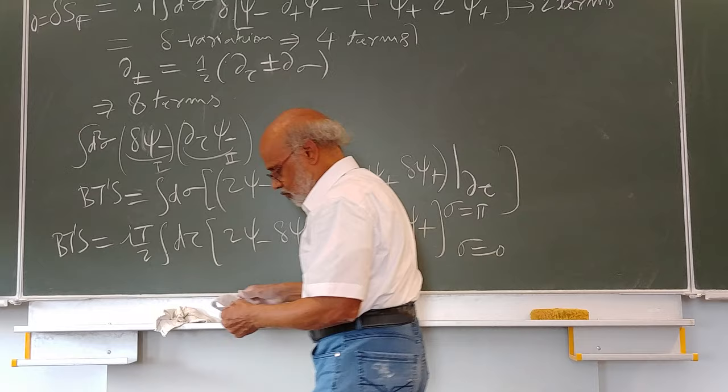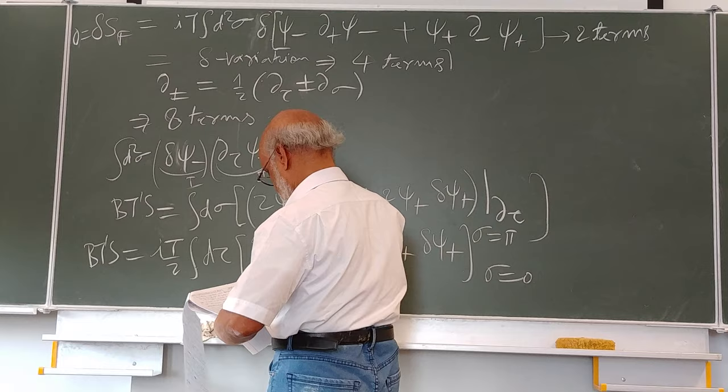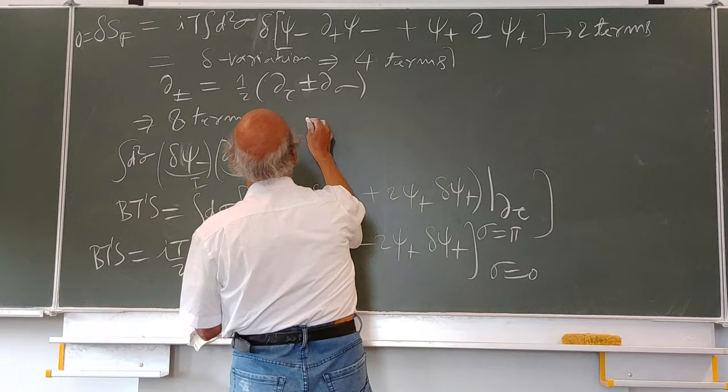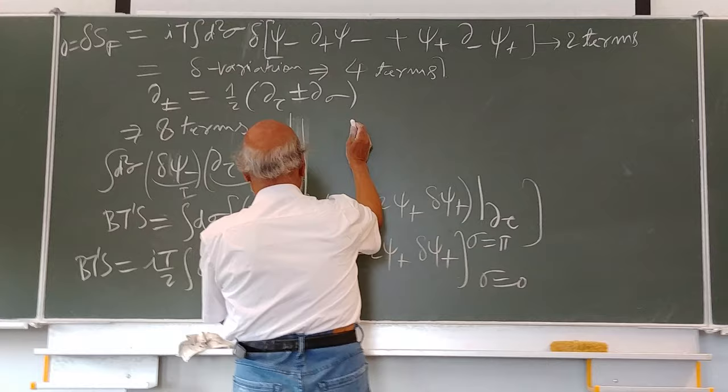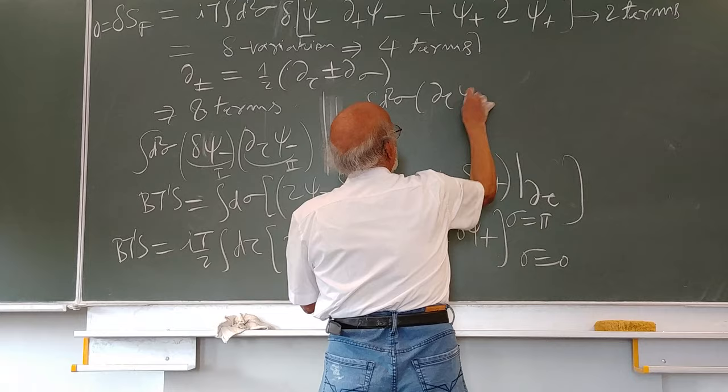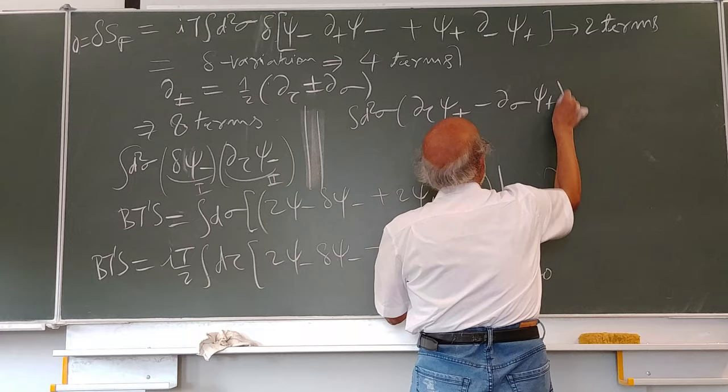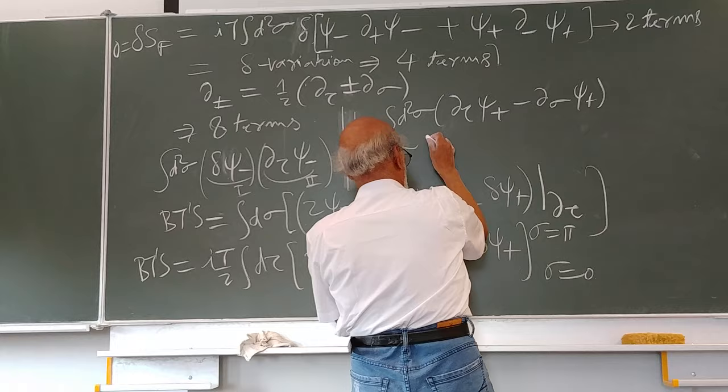In addition, you would have terms of the type: d-squared sigma times (del-tau psi-plus minus del-sigma psi-plus).